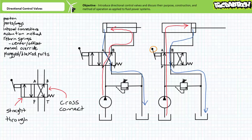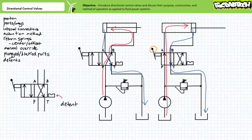Spring offsets aren't the only way directional control valves position the valve — consider something known as a detent. Detents behave radically differently than return springs. A spring-offset valve only asserts the straight-through position when the operator is actively pushing on the manual lever; otherwise the spring offset takes over. Detents, in contrast, are like mechanical latches — once a valve has been pushed into one position, it remains there until actuated again. Detents are schematically represented as a bar with a notch, and are commonly used to assist operators using manually actuated valves.